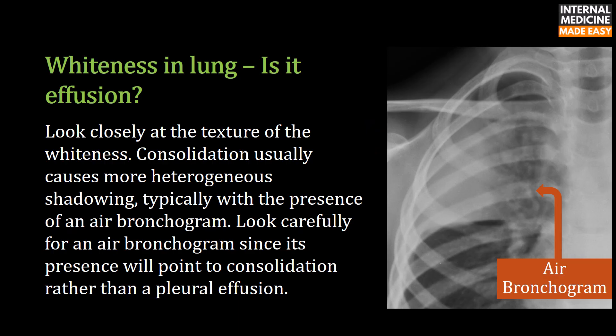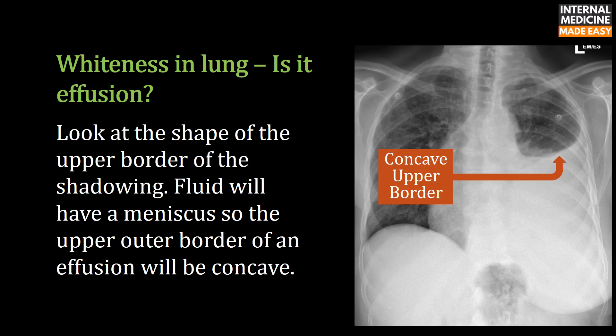When assessing whiteness in the lung — is it an effusion or not? — look closely at the texture of the whiteness. Consolidation usually causes more heterogeneous shadowing, typically with the presence of an air bronchogram. Look carefully for an air bronchogram, since its presence will point to consolidation rather than a pleural effusion. Also look at the shape of the upper border: fluid will have a meniscus, so the upper outer border of an effusion will be concave.